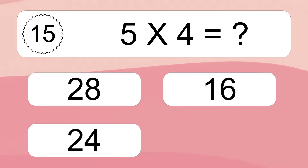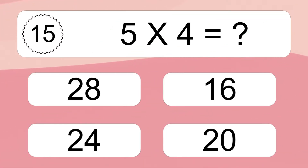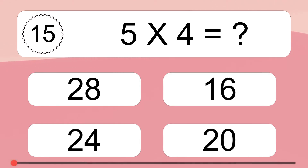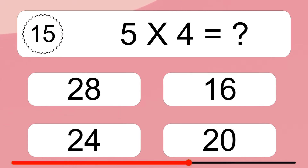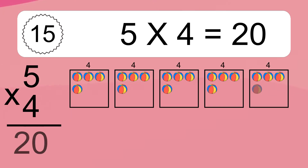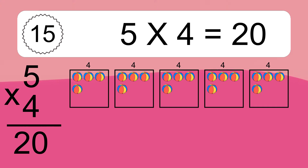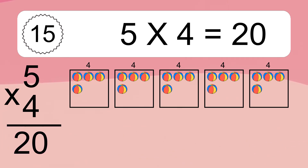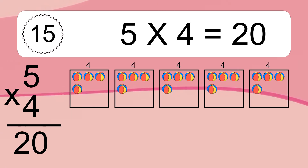5 times 4 equals what? 5 times 4 equals 20. We have 5 boxes and each box has 4 colorful balls inside. If you count all the balls in all the boxes together, you will have 5 times 4 balls.